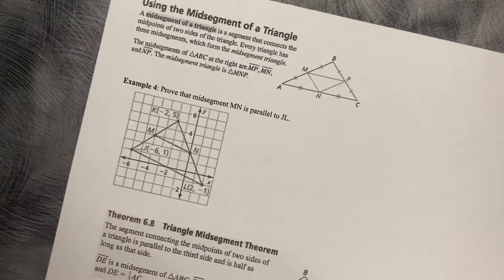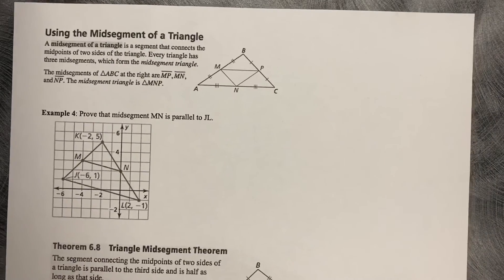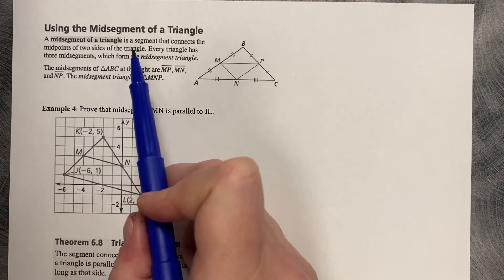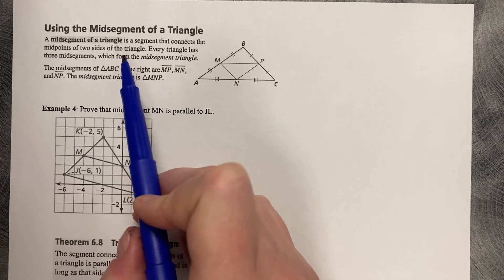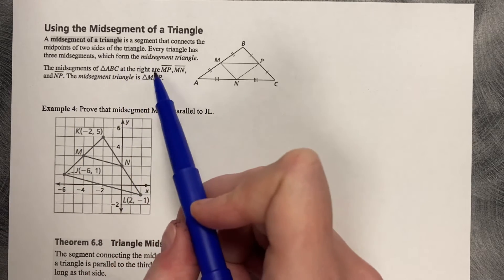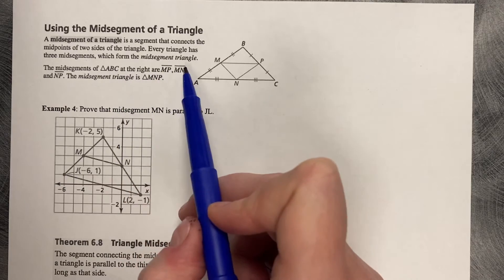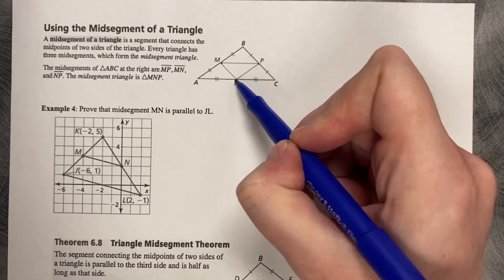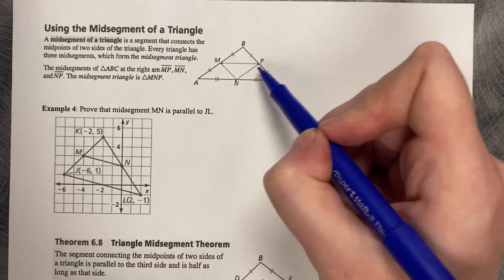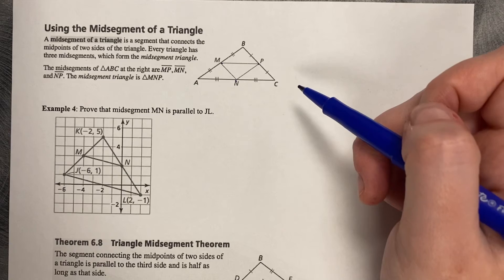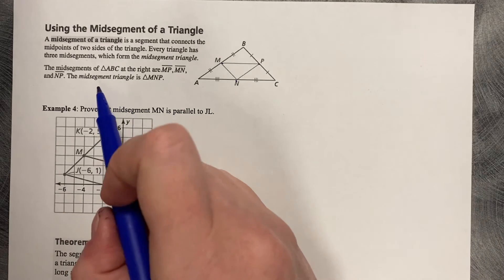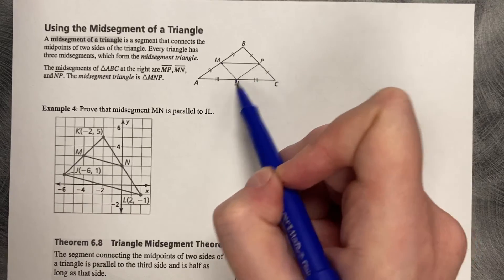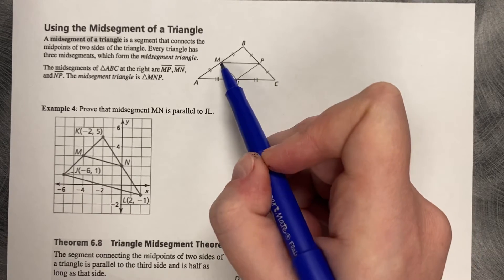Moving on to 3.4. 3.4 is all about what's called a mid-segment of a triangle. A mid-segment of a triangle is a segment that connects the mid-points of two sides of the triangle. Every triangle has three mid-segments, which form the mid-segment triangle. So if you take a look, there's a middle, there's a middle, there's a middle. Connect those middles, and this inside triangle is called the mid-segment triangle. The mid-segments of ABC at the right are MP, MN, and NP, and the mid-segment triangle is MNP.